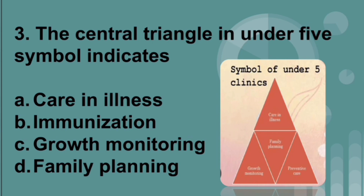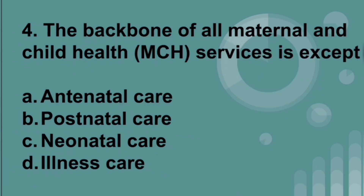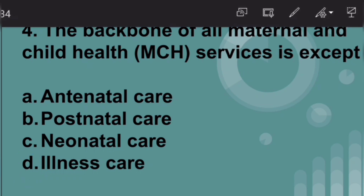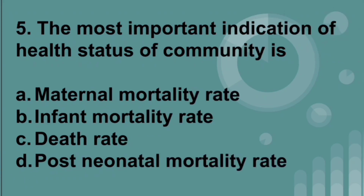The central triangle in the under-five symbol indicates family planning. The backbone of all maternal and child health services is everything except illness care. The most important indication of the health status of a community is infant mortality rate.